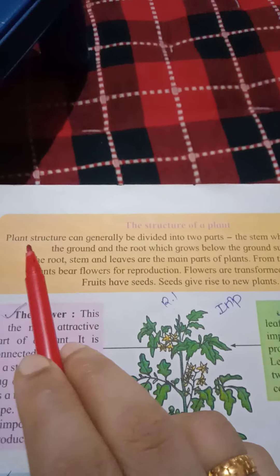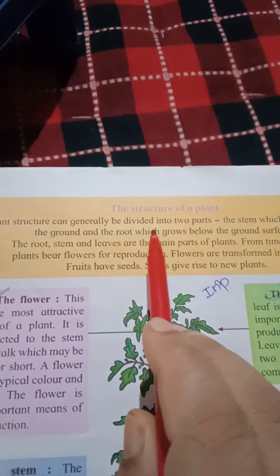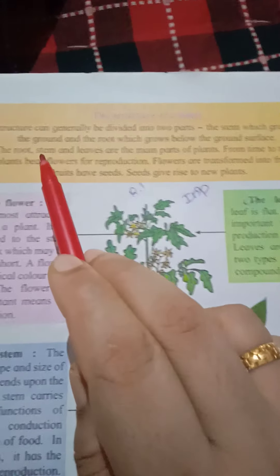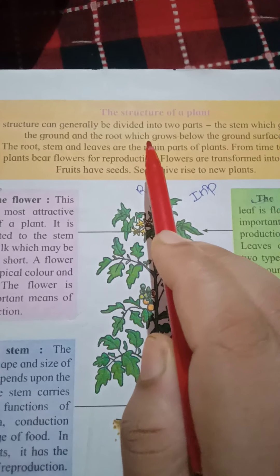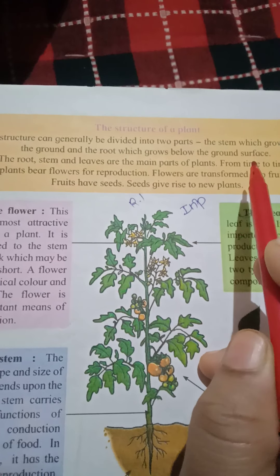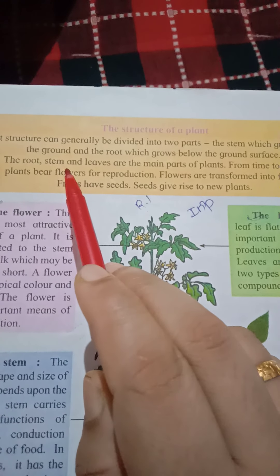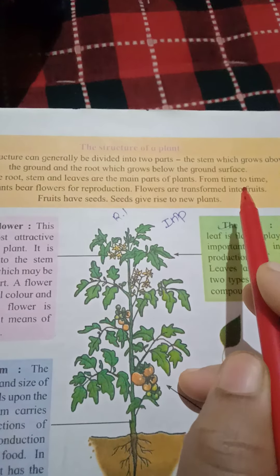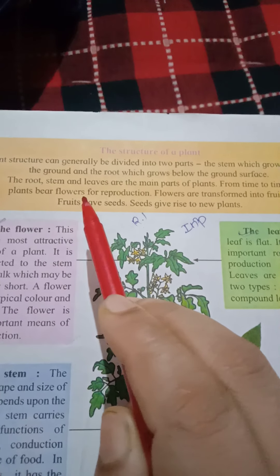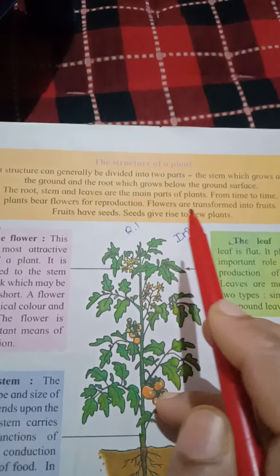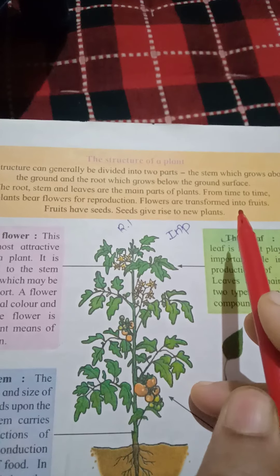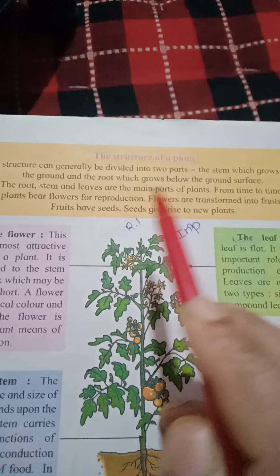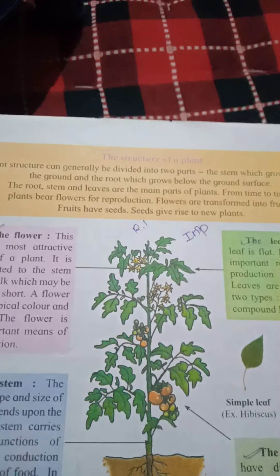Plant structure can generally be divided into two parts: the stem which grows above the ground and the root which grows below the ground surface. The root, stem and leaves are the main parts of the plant. From time to time, plants bear flowers for reproduction. Flowers are transformed into fruits, fruits have seeds, and seeds give rise to new plants.